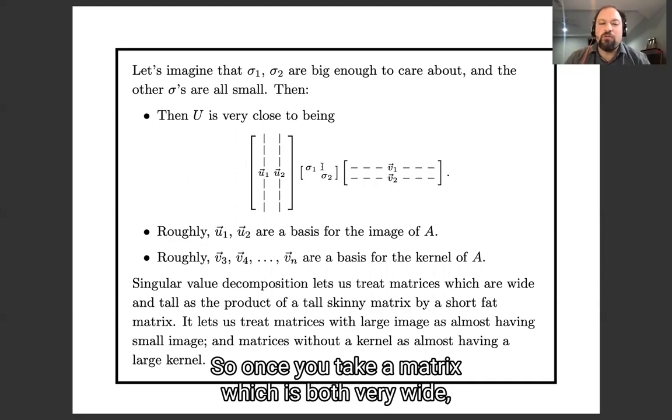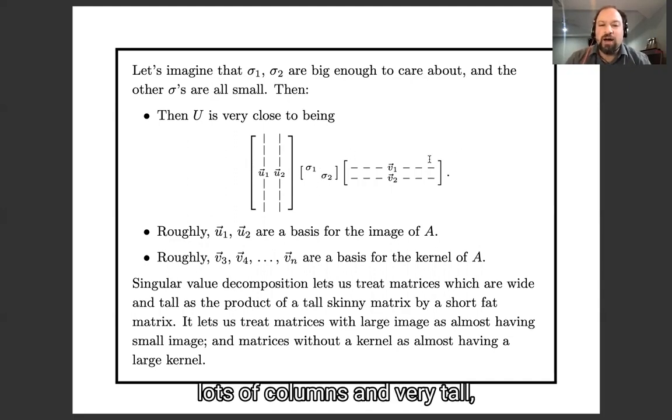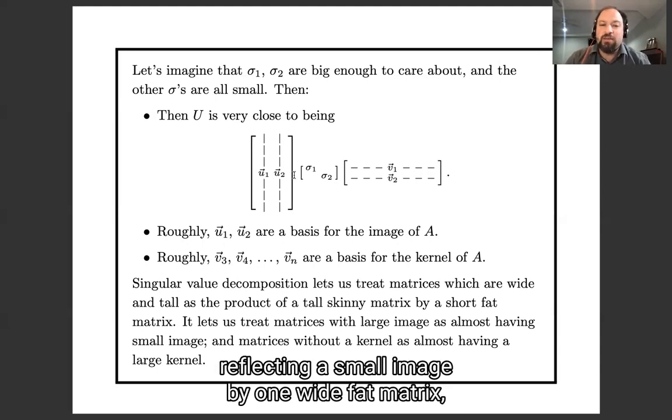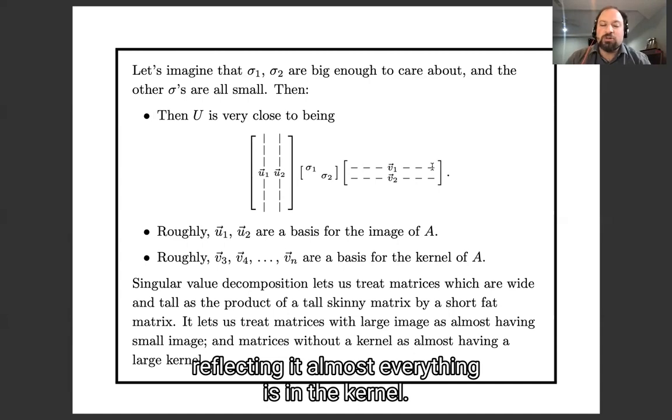So it lets you take a matrix which is both very wide, lots of columns, and very tall and treat it as the product of one tall skinny matrix reflecting a small image by one wide fat matrix reflecting that almost everything is in the kernel.